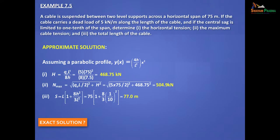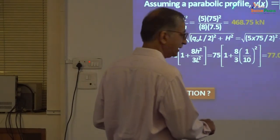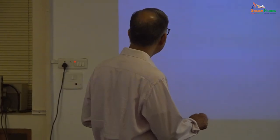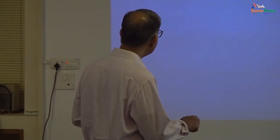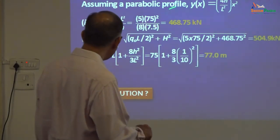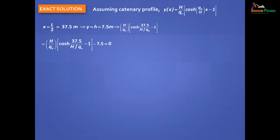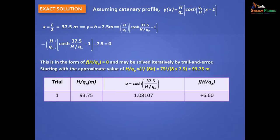For the exact solution, you know this equation is not correct — the correct equation is the catenary equation. And unfortunately it's not easy to solve. So let's use the boundary conditions. We know that half the horizontal span is 37.5 m and H is 7.5 m. Q0 we already know. But H/Q0 is coming here, so we have to solve for H/Q0 numerically. Actually we can take the parabolic solution for H/Q0 as a starting solution.